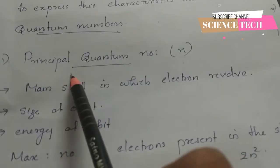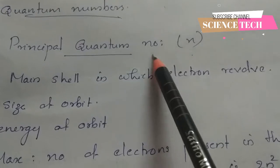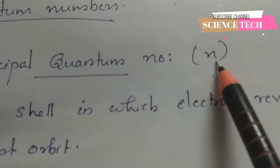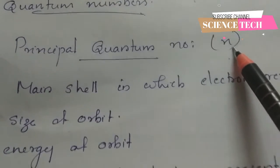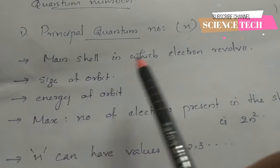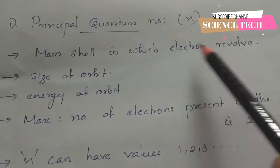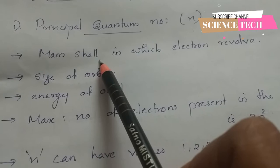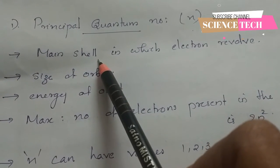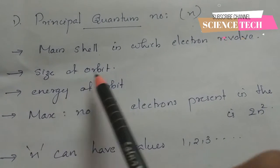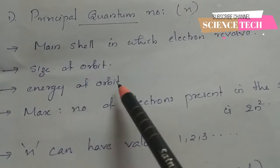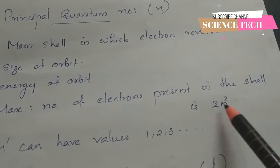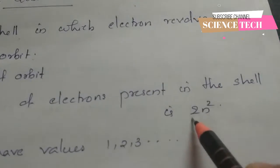The first one is the principal quantum number, denoted by n. The principal quantum number gives information about the value of the orbit, the size of the orbit, and the energy of the orbit. The number of electrons in a shell is given by 2n².